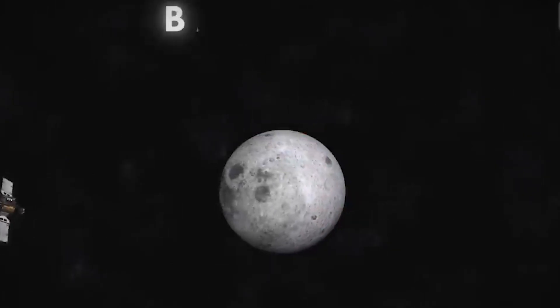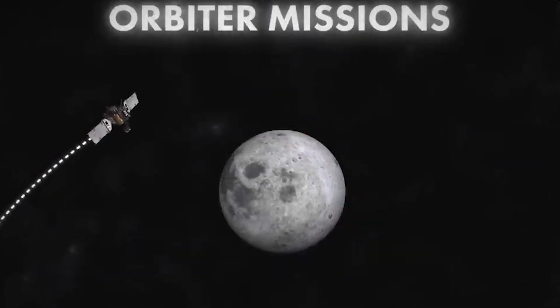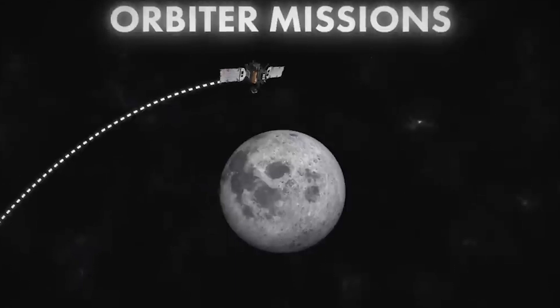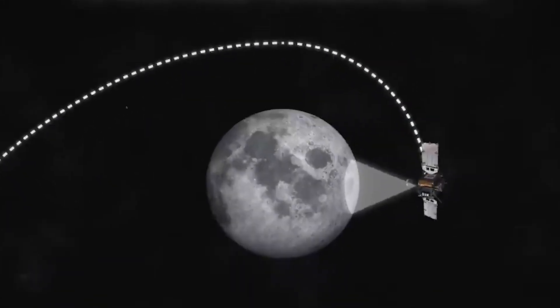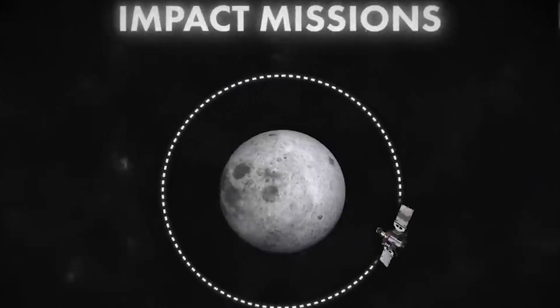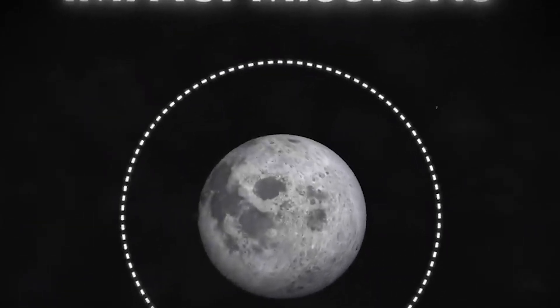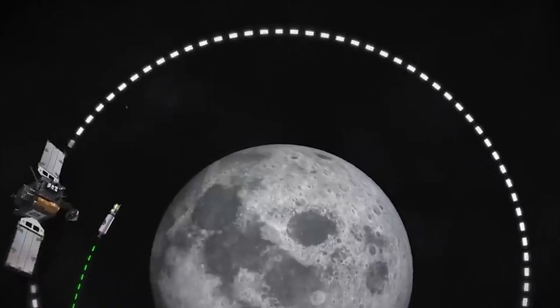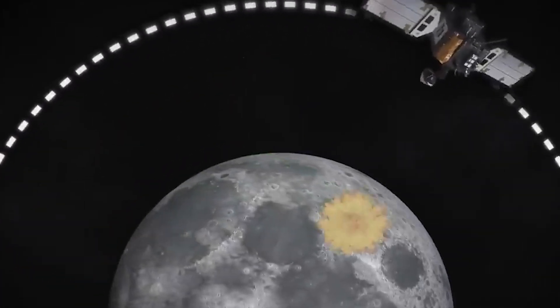The Soviet Union used fly-by missions first. These missions carried more risk. The second type of mission is the orbiter mission — the spacecraft orbits the moon, going around in a loop. Then there is also the impact mission, which is a type of orbiter mission.